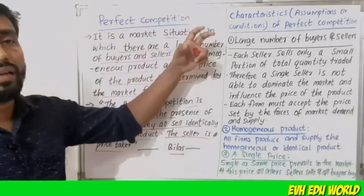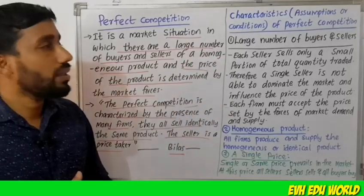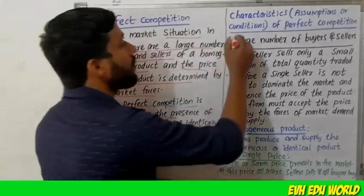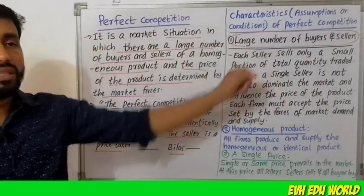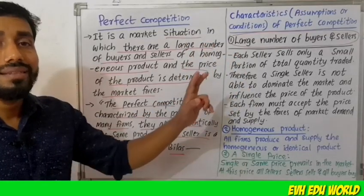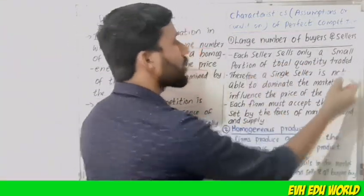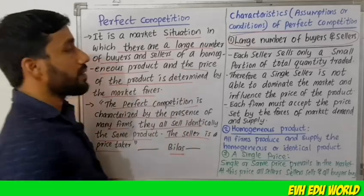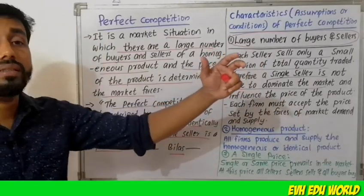The features, characteristics, assumptions, and conditions of perfect competition are as follows. First, there are a large number of buyers and sellers. Each seller sells only a small portion of the total quantity traded, meaning a single seller is not able to dominate the market.